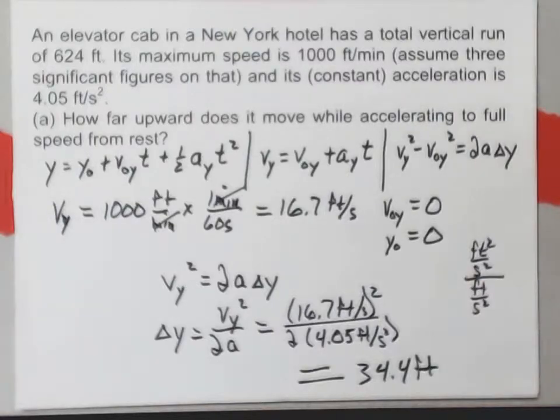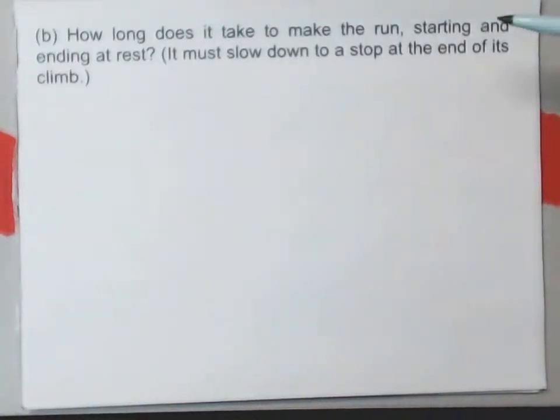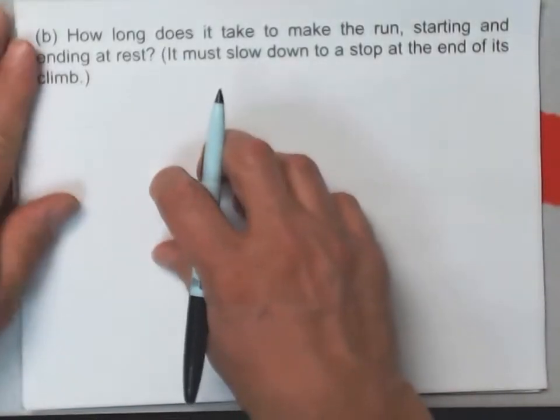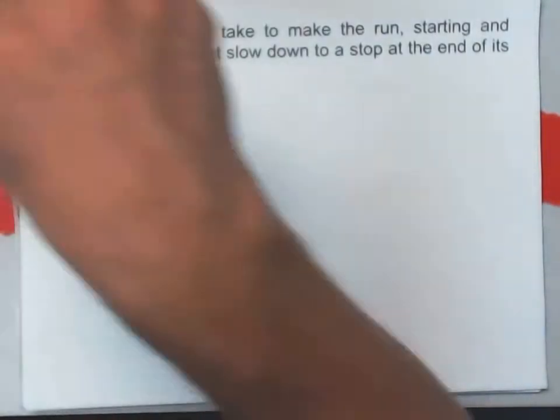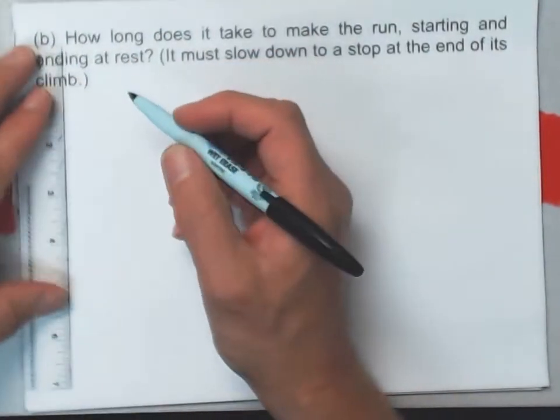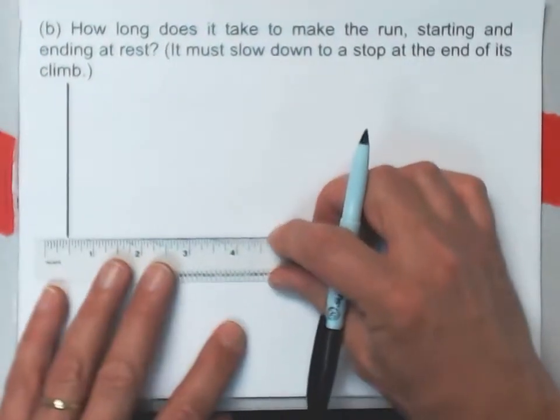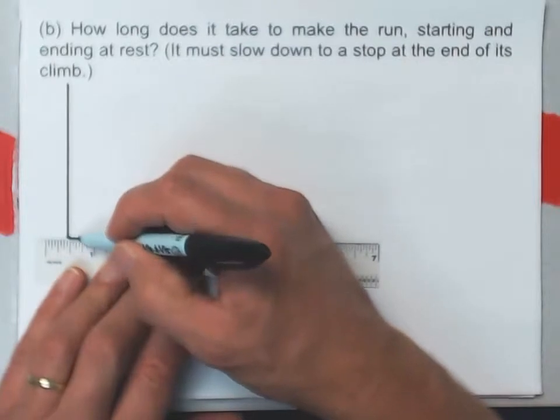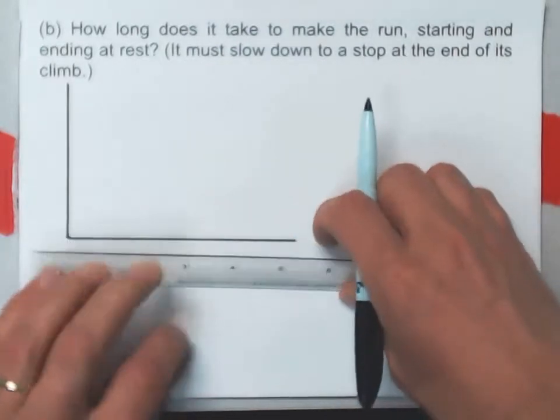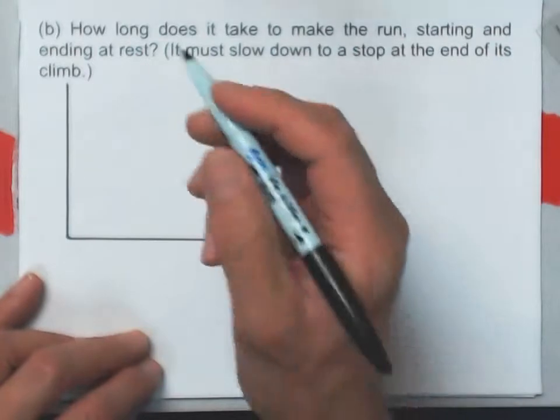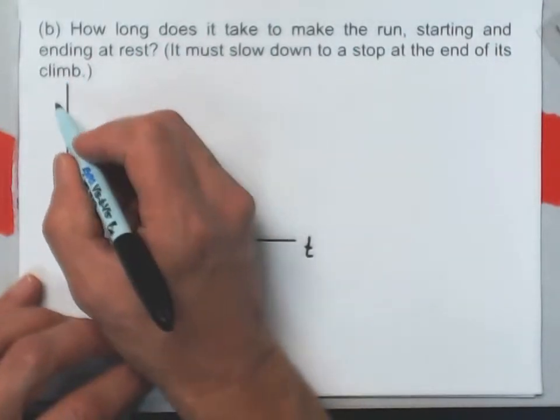Let's move on to part B. Part B says how long does it take to make the run, starting and ending at rest? And it must slow down to a stop at the end of its climb. This is the part that I'm going to break into three parts. And I'm going to start by making a quick graph here to illustrate just what this thing is doing, a y versus t graph for the motion.